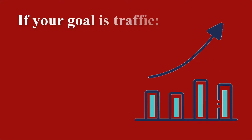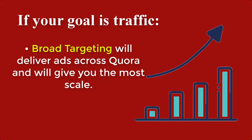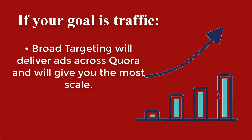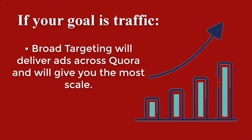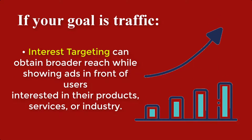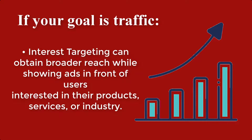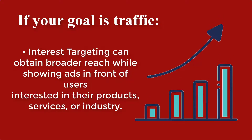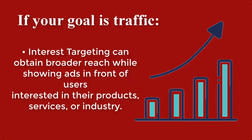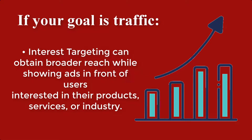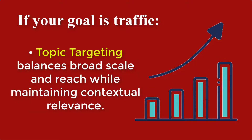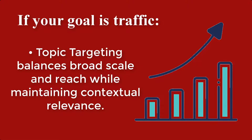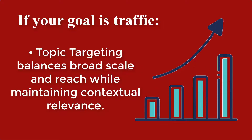If your goal is traffic, you have broad targeting that will deliver ads across Quora and give you the most scale. Next, you have interest targeting, which can obtain broader reach while showing ads in front of users interested in your products, services, or industry. You also have topic targeting, which balances broad scale and reach while maintaining contextual relevance.